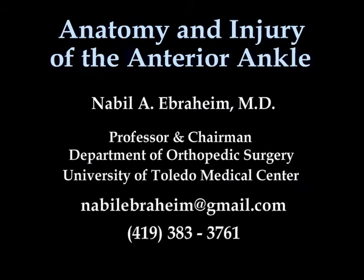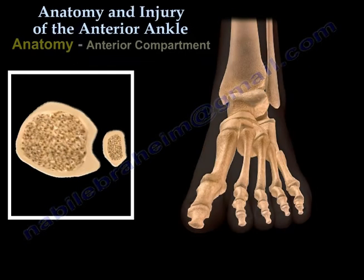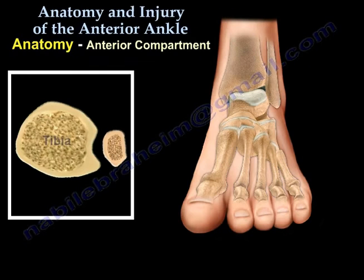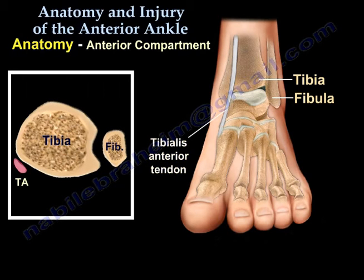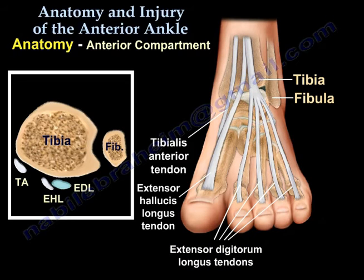Anatomy and injury of the anterior ankle. Anatomy of the anterior compartment includes the tibia and the fibula. It also includes the tibialis anterior tendon, the extensor hallucis longus tendon, and the extensor digitorum longus tendons.